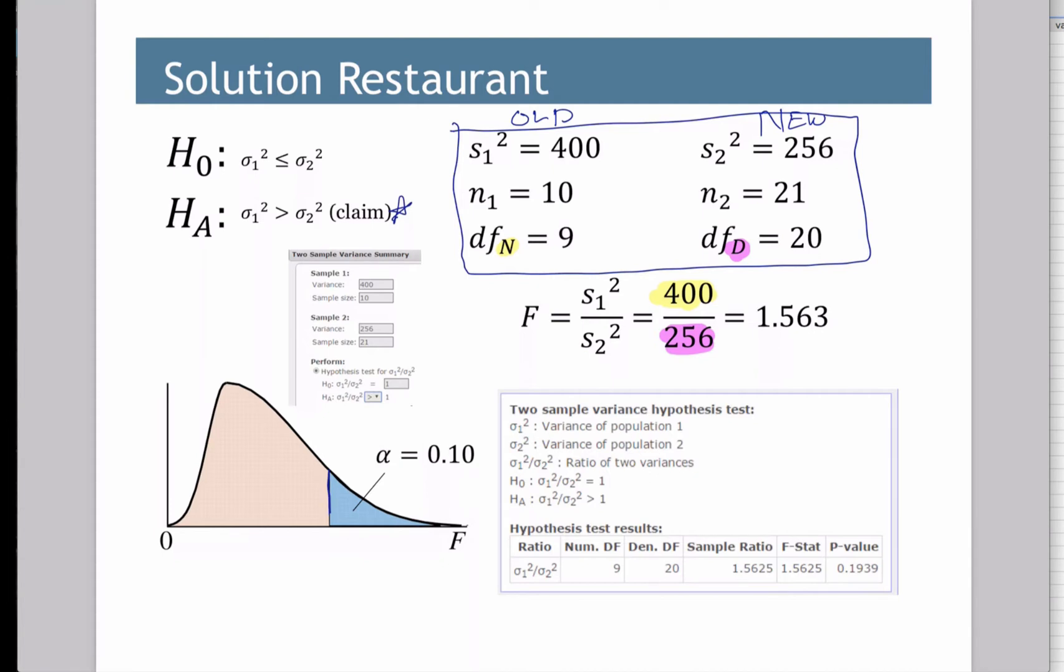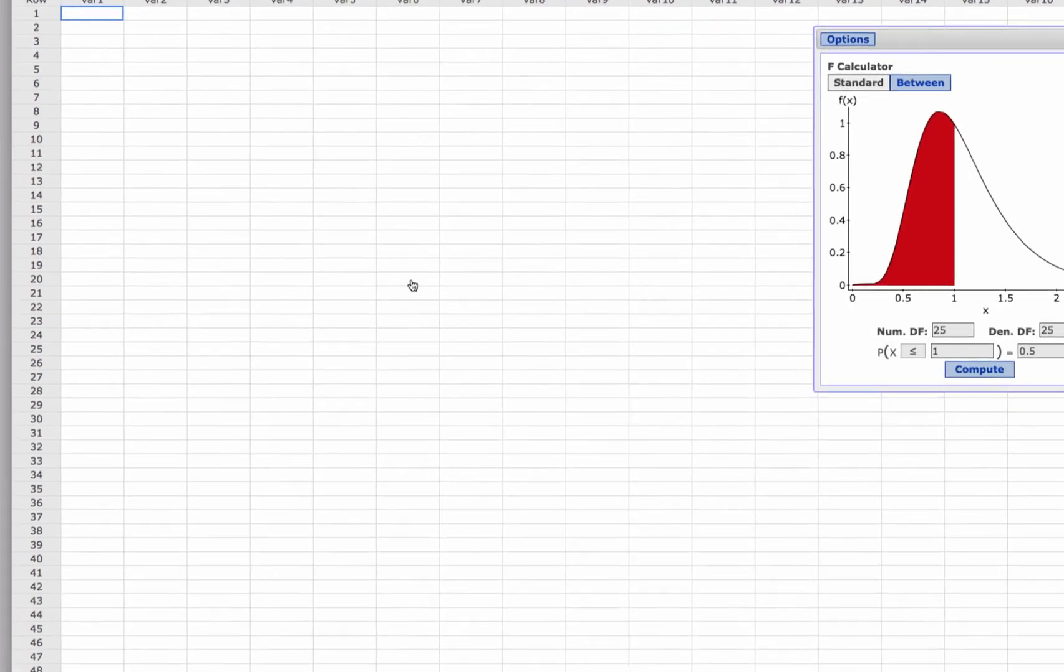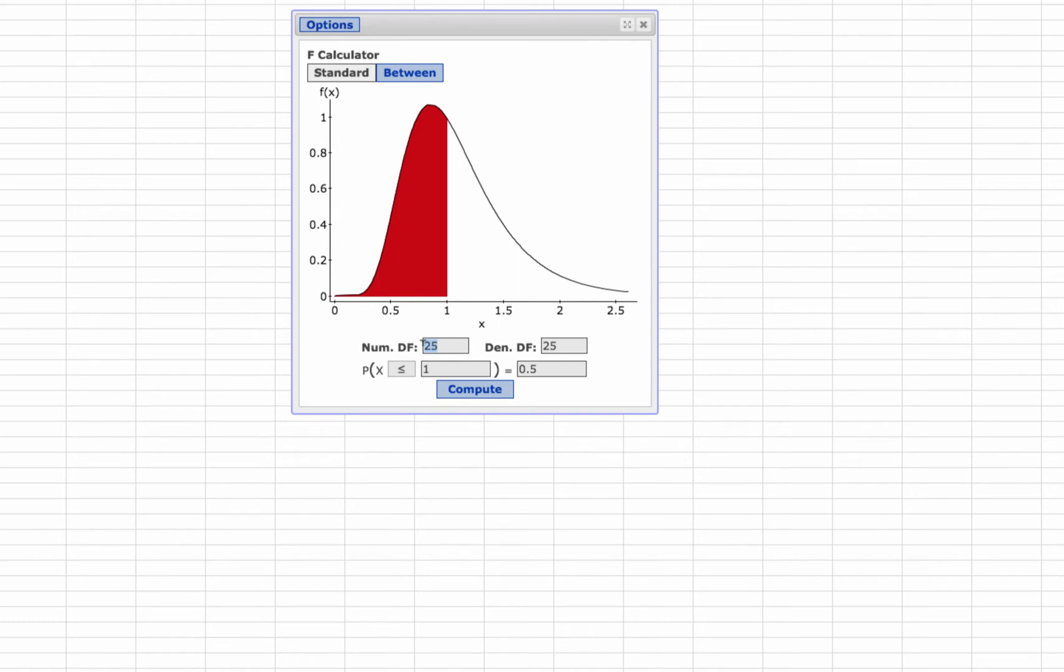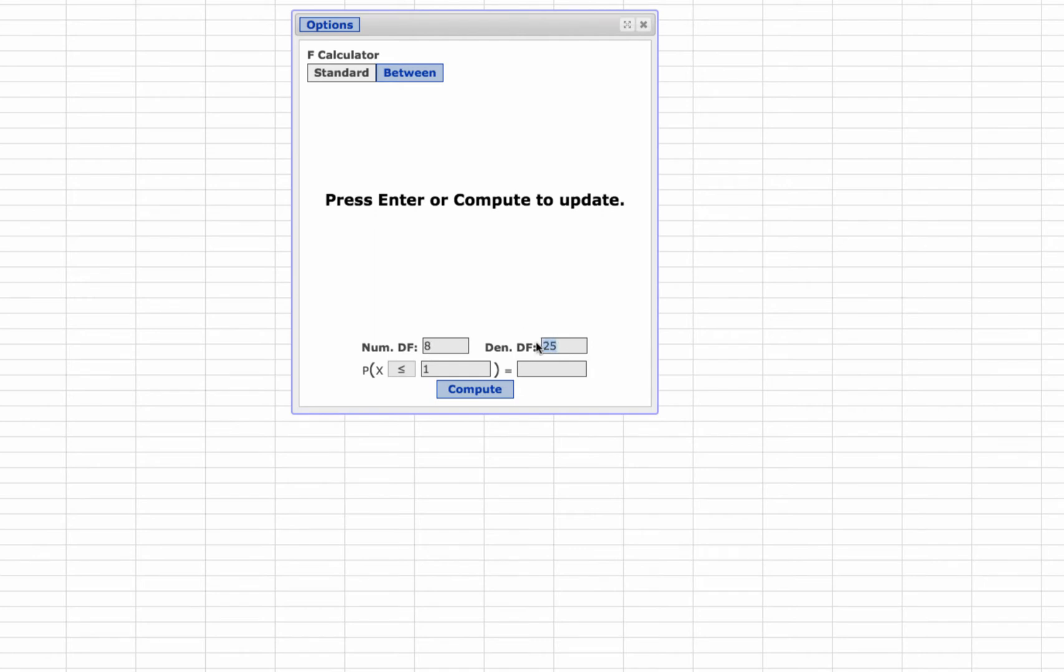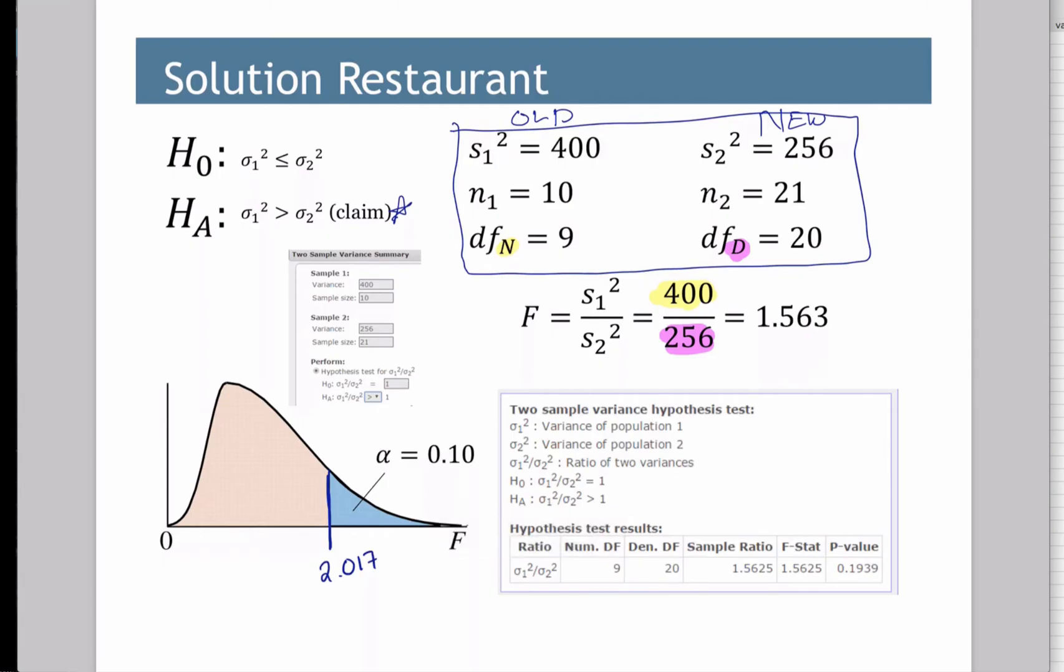Let's look up our critical values though. Alpha was .10, so let's look up that. So let's jump into StatCrunch. Stat, calculators, F distribution. And degrees of freedom from the numerator, the sample size for the numerator was 9, so 9 minus 1 is 8. Denominator, that had a sample size of 20, so 20 minus 1 is 19. I need to go to the right, and alpha was, I believe it was 10. There we go. So our critical value is, looks like, 2.017.